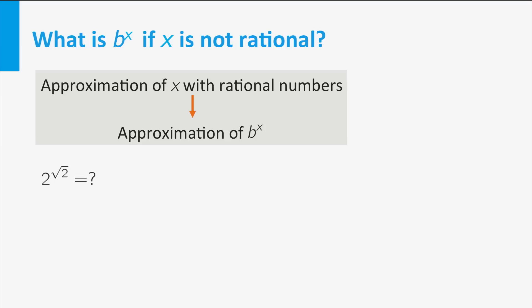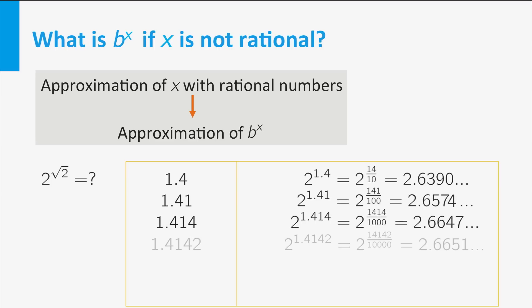For example, what is 2 to the power the square root of 2? We can approximate the square root of 2 by 1.4, which is the rational number 14 over 10. Then we can approximate 2 to the power square root of 2 by 2 to the power 1.4, which is 2.63 etc. Using more decimals for the square root of 2, we get a better approximation. By taking a limit, we find 2 to the power the square root of 2.